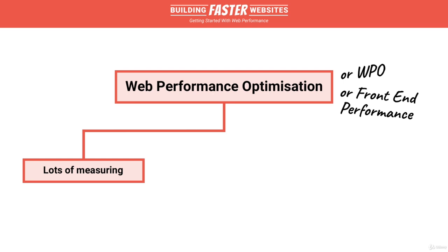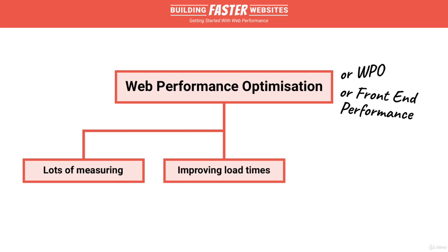Once we've recorded load time metrics, the next step is to improve them. This is largely done by performance optimisations which reduce HTTP response latency — the time it takes to get a website's assets from the server to the browser. This allows the browser to render the website sooner.